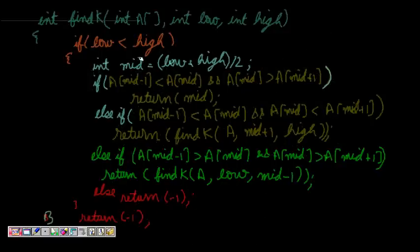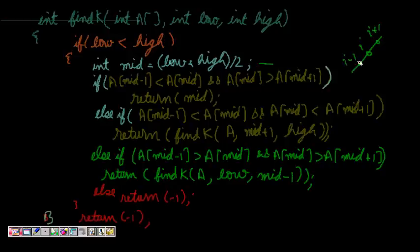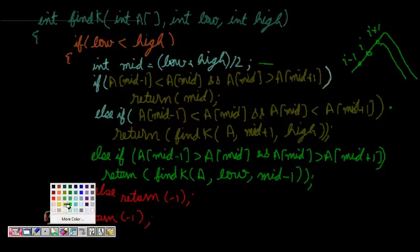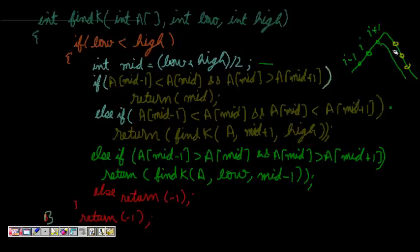So this is the code which is written here completely. If low is less than high, I find the mid. It is the first case. I'm going here: i, i+1, and i-1. So if a[mid-1] is less than a[mid] and a[mid] is less than a[mid+1], then what happens? This is the case, so I return find k in this part. But if what happens? If the elements are somewhere here, mid is here, then a[mid-1] is greater than a[mid] and a[mid] is greater than a[mid+1], then I return find k, a, low, till mid-1. Till here I will make my search.